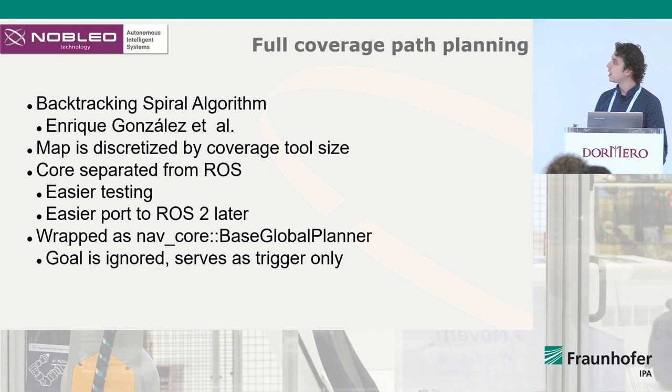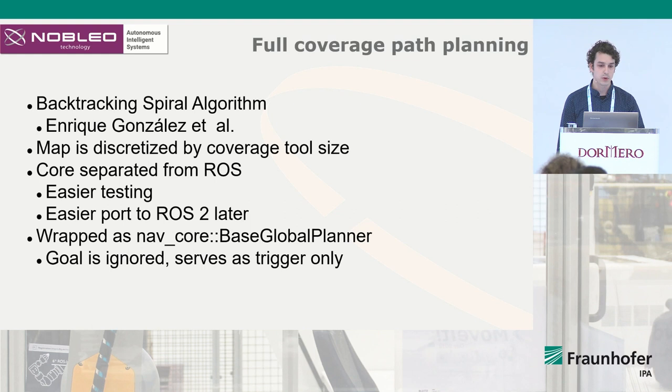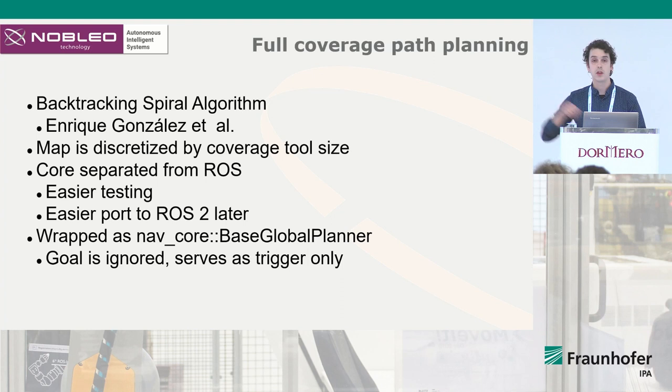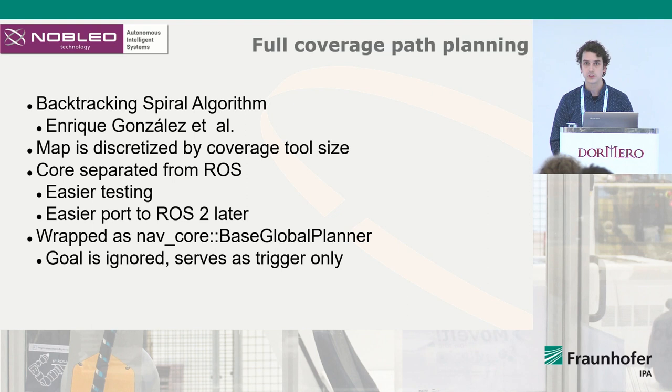The algorithm we use is called the backtracking spiral algorithm, developed by Enrique Gonzalez in 2005. It works by first discretizing the map to the size of the robot, then moving the robot up to a wall, making a spiral all the way to the middle, then planning to free space again and repeating the process. The core algorithm is separated from ROS, which allows for easier testing and easier porting to ROS 2.0 later on. Currently it's wrapped as a base global planner, so you can plug it into MoveBase or even MoveBase Flex.